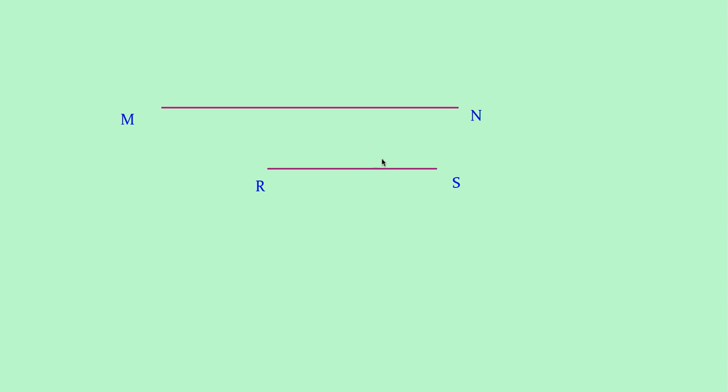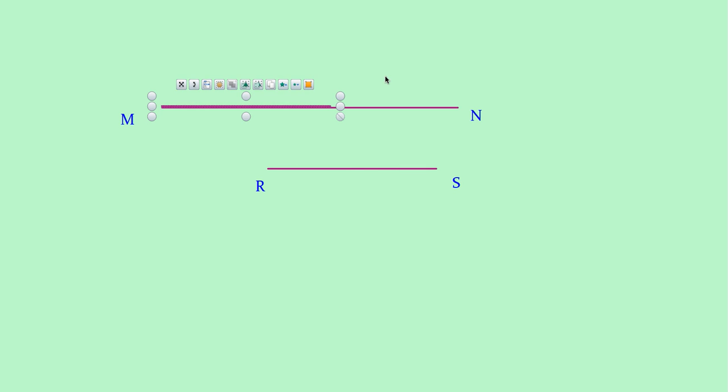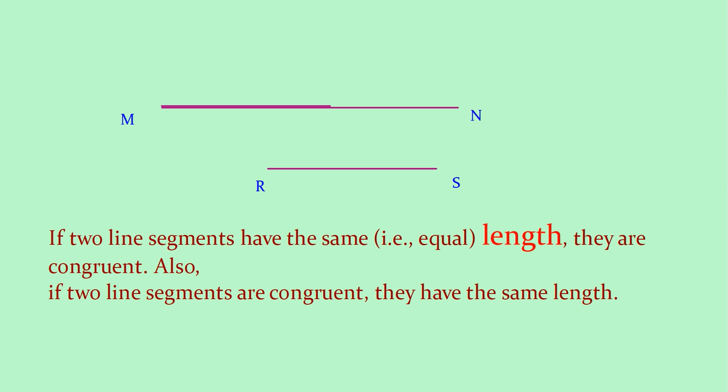What about line segments MN and RS? If you take a trace copy of RS and keep it on MN, will it cover exactly? No, it won't cover exactly. So these two are not congruent. Therefore, if two line segments have the same length, they are congruent. Also, if two line segments are congruent, they have the same length.